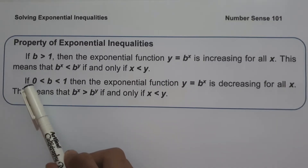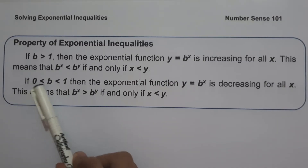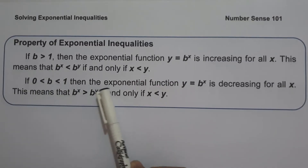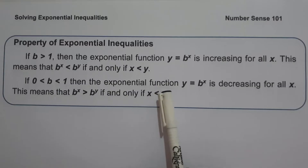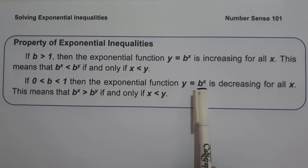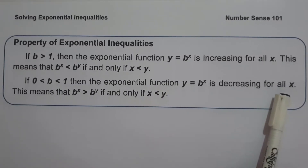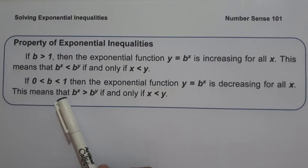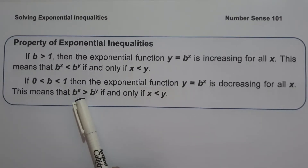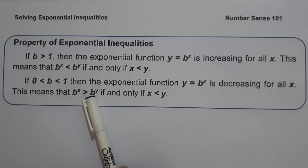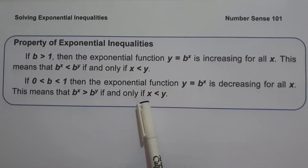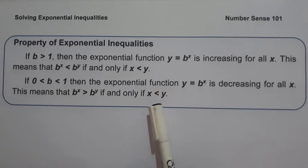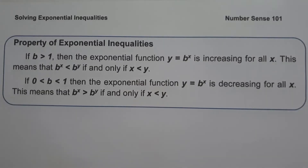The second property: if b is greater than 0 but less than 1, then the exponential function y equals b raised to x is decreasing for all x. This means that b raised to x is greater than b raised to y if and only if x is less than y. That means if the base is less than 1, the direction of the inequality is reversed.